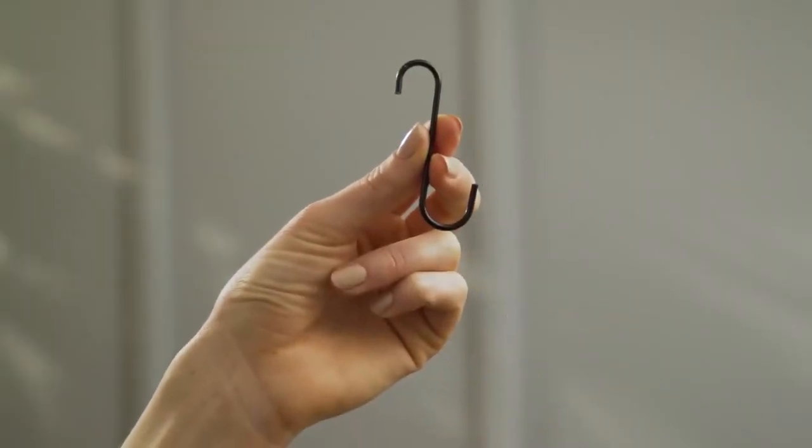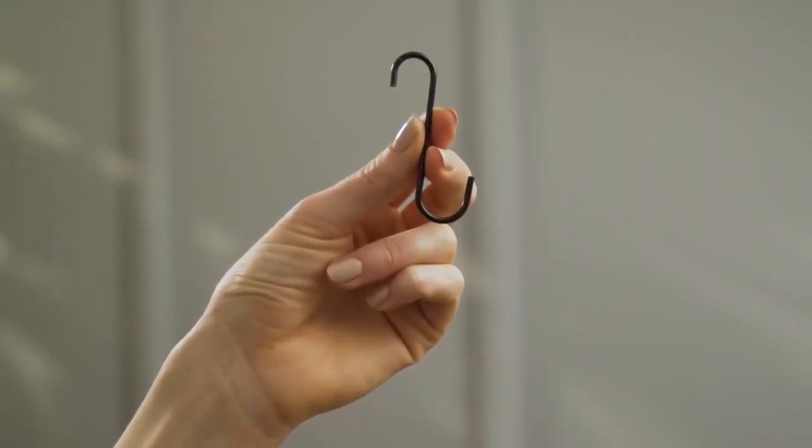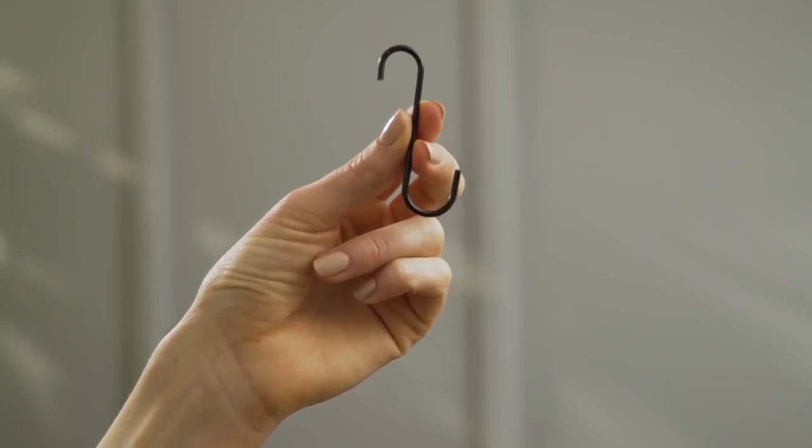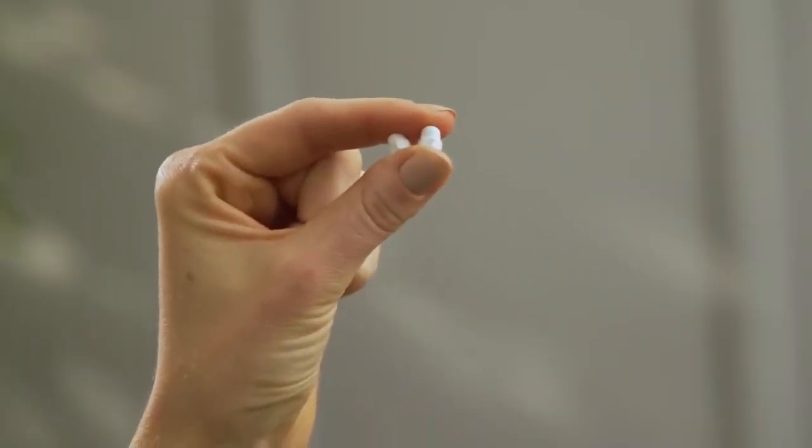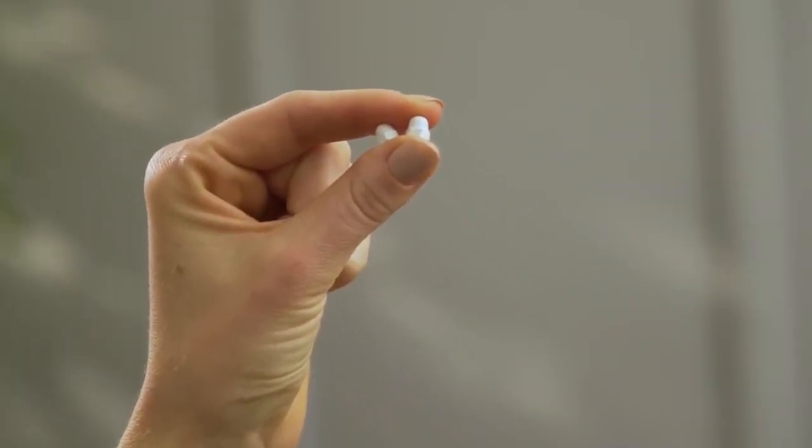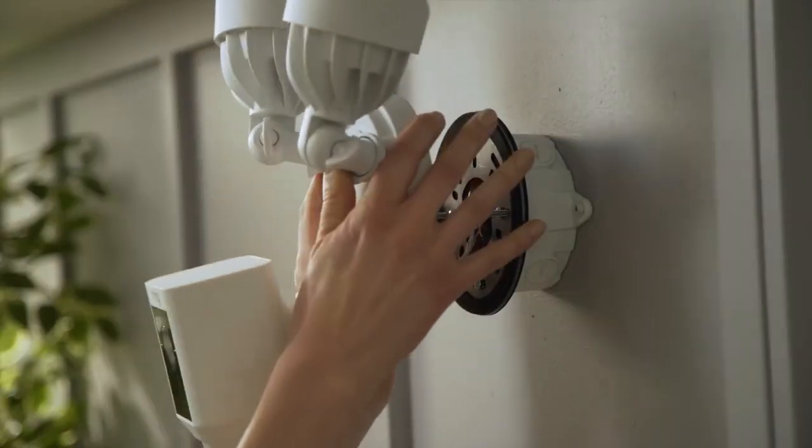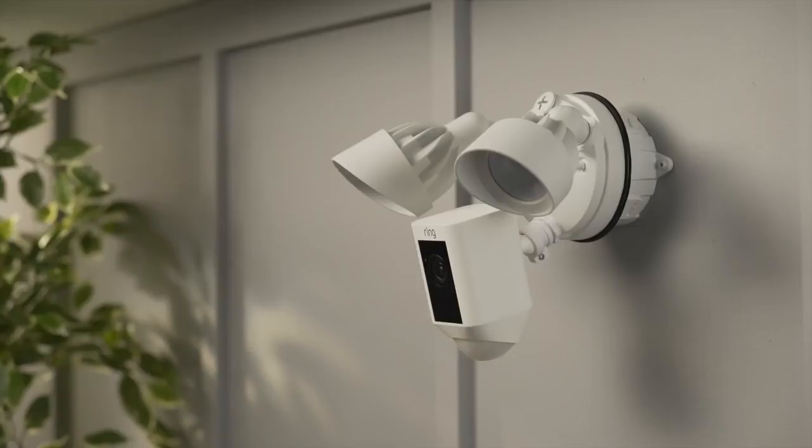This hook is for hanging your Floodlight Cam from the mounting bracket while you're connecting the wires. These small cap nuts will secure your Floodlight Cam to the bracket. You'll need to install your Floodlight Cam and wire it to power before you can complete the in-app setup.